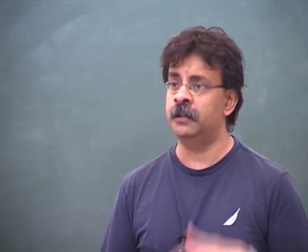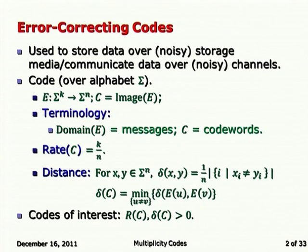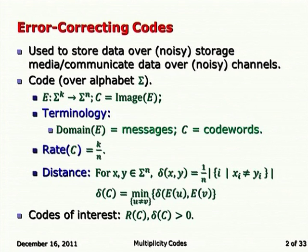The rate of a particular code is the ratio k over n, and in codes that we like to design and use, we would like this quantity to be as high as possible. Every storage medium we know of today uses some form of error correction. Pretty much all of them are working with explicit Reed-Solomon codes or variations thereof, and their rates are in the 80 to 90 percent regime. The distance of a code ensures that if you have two different messages, the encoding maps them to strings which are very far apart, measured using Hamming distance.